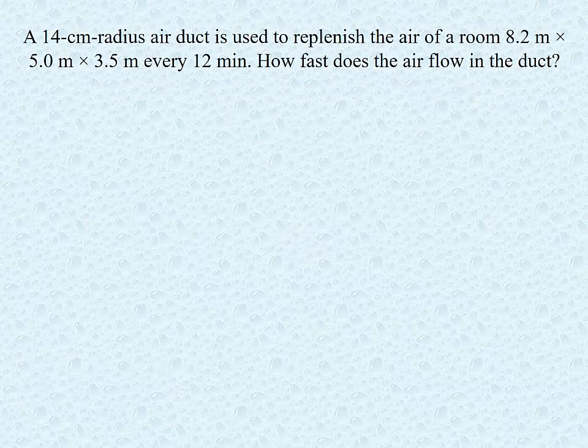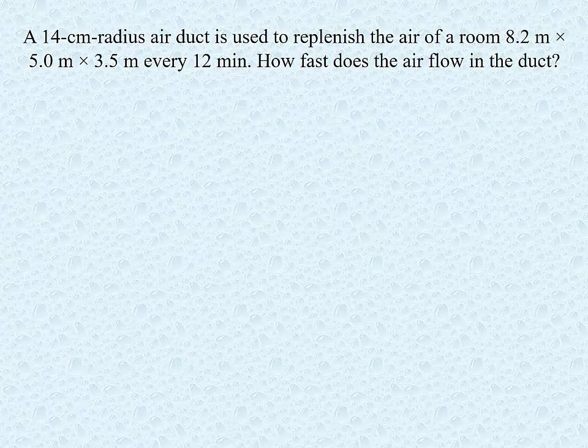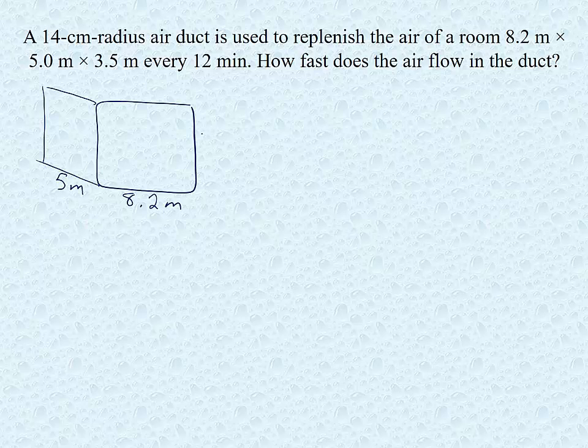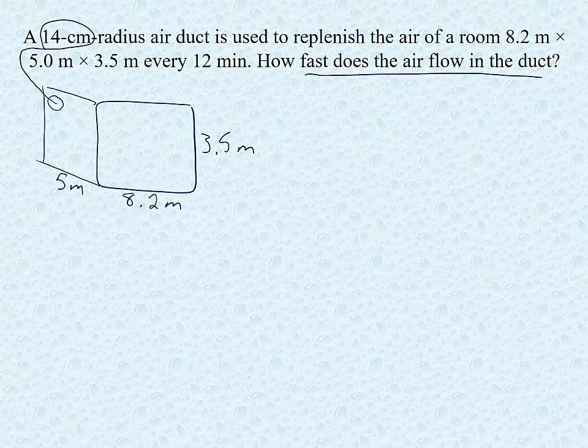For the first question we have a 14 centimeter radius air duct used to replace the air in a room 8.2 meters by 5 meters by 3.5 meters every 12 minutes. The question is how fast is the airflow in the duct? So if we start with a room 8.2 meters, 5 meters, 3.5 meters, we've got a duct with radius of 14 centimeters, and we are looking for the airflow in the duct.